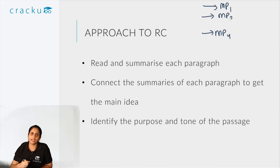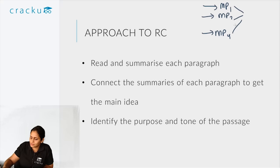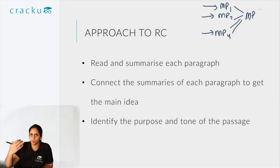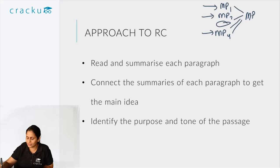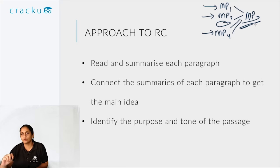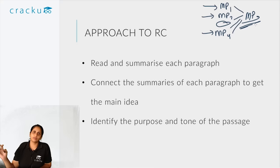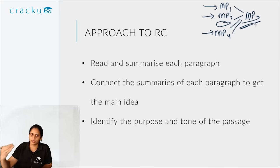Your second step should be identifying the overall main point of the passage — essentially the point the author is trying to make throughout. All of the sub-main points will be related to and support the main point. If you find that any sub-main point seems unrelated to the overall main point, then you have gotten the overall main point wrong. The author will not divert into something completely irrelevant.